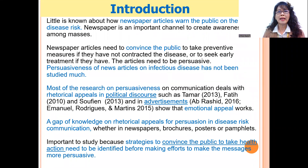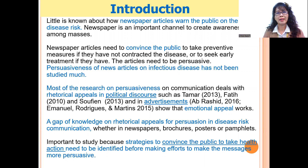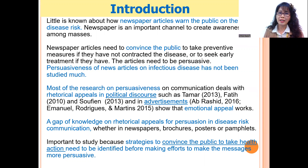At the moment, little is known about how newspaper articles warn the public on disease risk. Newspaper is still an important channel to create awareness among the masses, even in this era of social media. Newspaper articles have a role to play to convince the public on preventive measures to take if they contract rabies or other diseases, and for newspaper articles to have effect, they need to be persuasive.